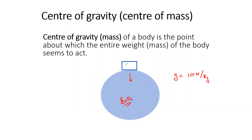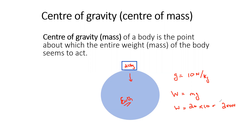So this object is 20 kg. What is the weight of the object? Weight is mass multiplied by gravity. The mass is 20 and gravity is 10, so this object will experience a force of 200 Newtons. The total force this object experiences is known as its weight.